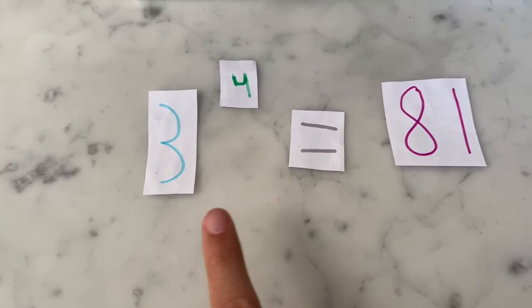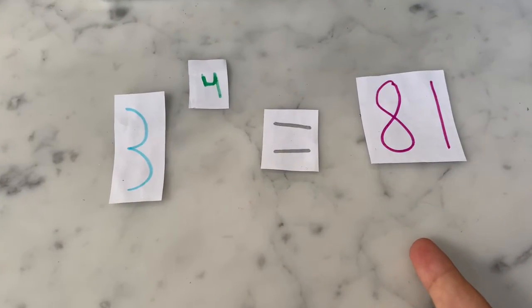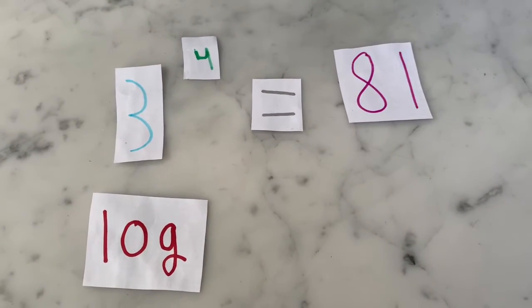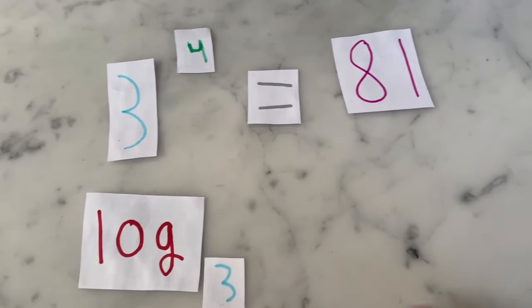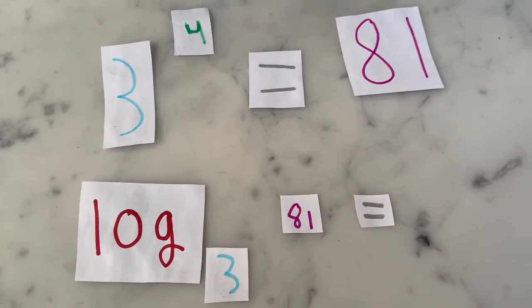So 3 times 3 times 3 times 3 will equal 81. To rearrange this, you can write log base 3 of 81 will equal 4.